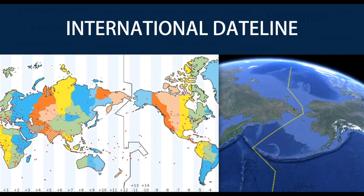The international date line, established in 1884, passes through the mid-Pacific Ocean and roughly follows the 180 degrees longitude north-south line on the earth. It is located halfway around the world from the prime meridian, which is 0 degrees longitude established in Greenwich, England in 1852.